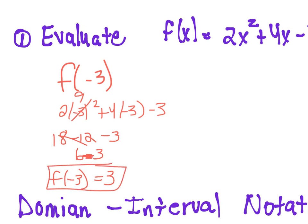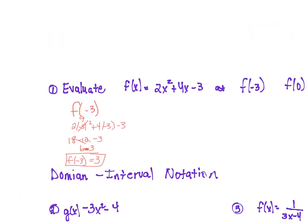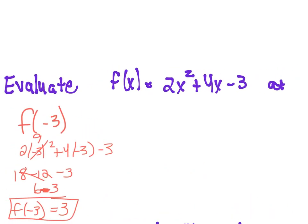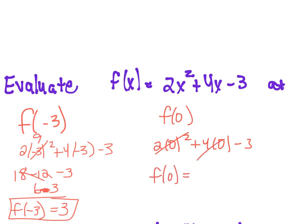I'd like you to write it like that — if you don't, I'm not going to take off points, but that's the correct way to write it. Now we do the same thing with 0. f of 0: 0 squared is 0 times 2 is 0, and 4 times 0 is 0. So f of 0, when I plug in 0, I get out negative 3.